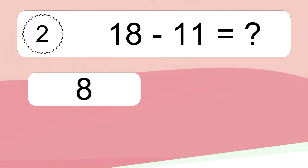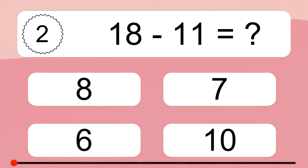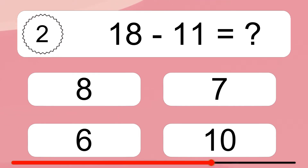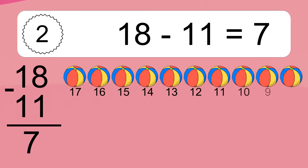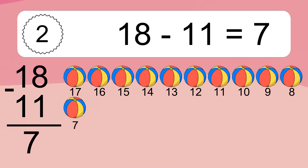18 minus 11 equals what? 18 minus 11 equals 7. Let's count it: 17, 16, 15, 14, 13, 12, 11, 10, 9, 8, 7.